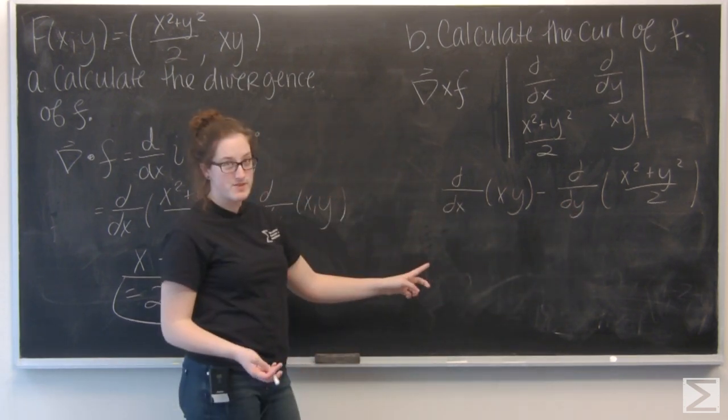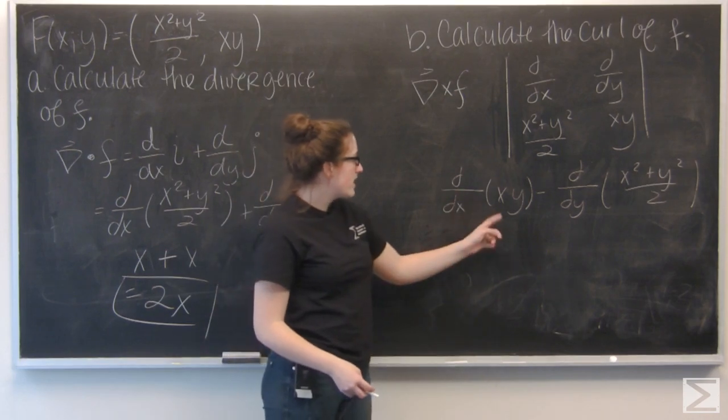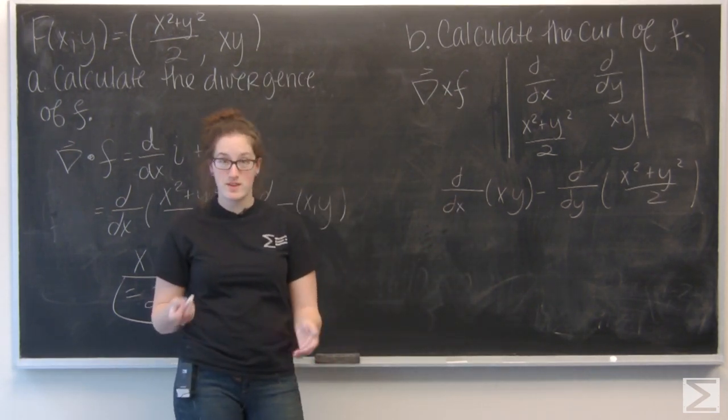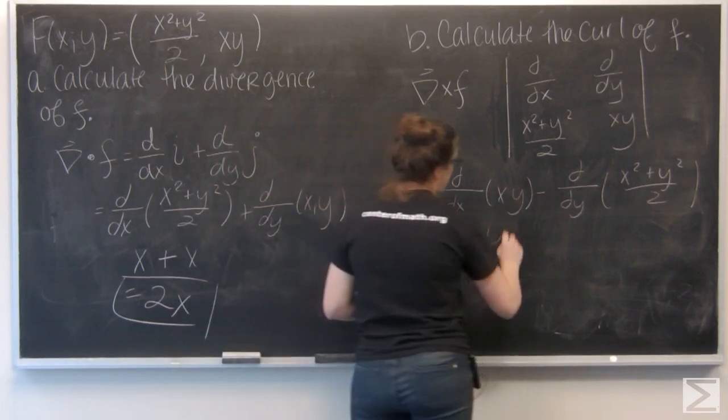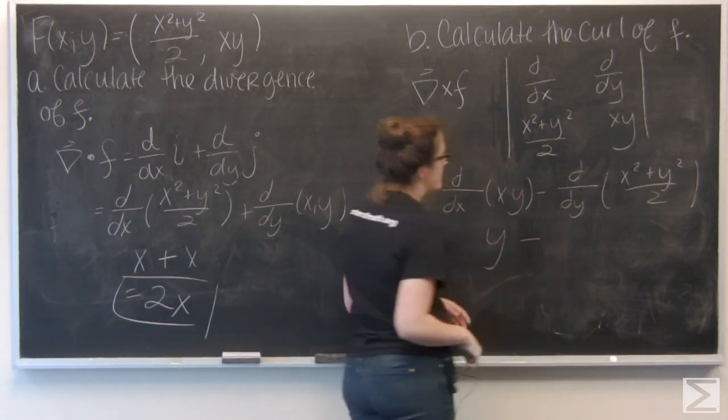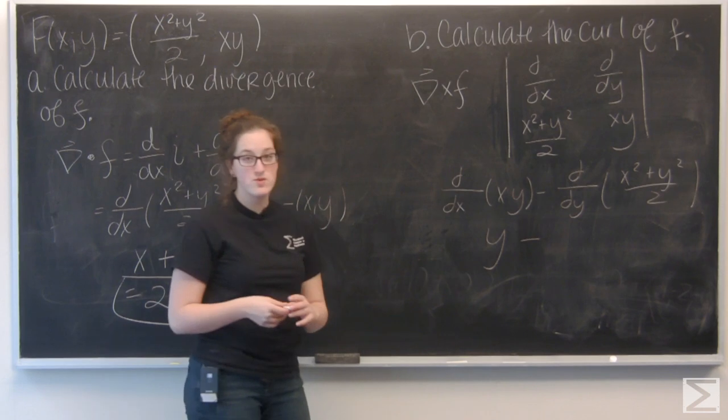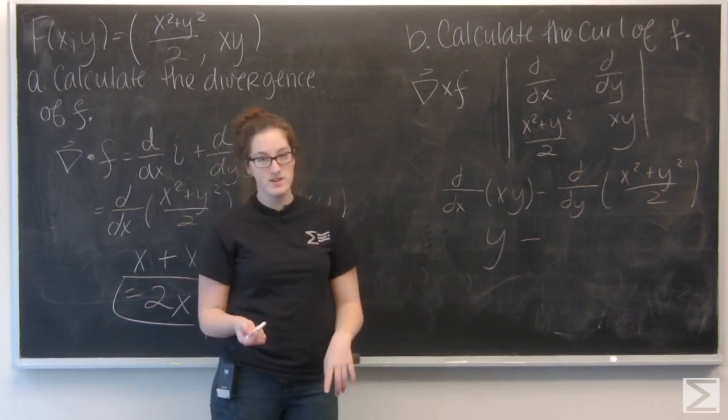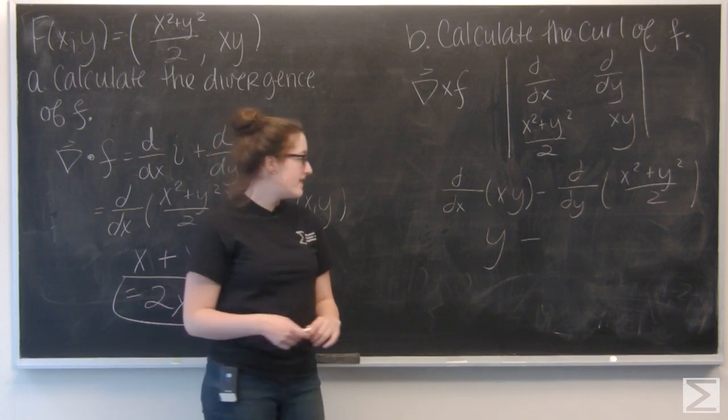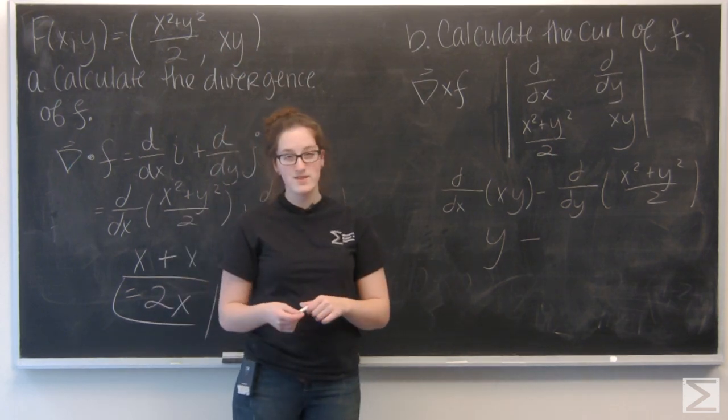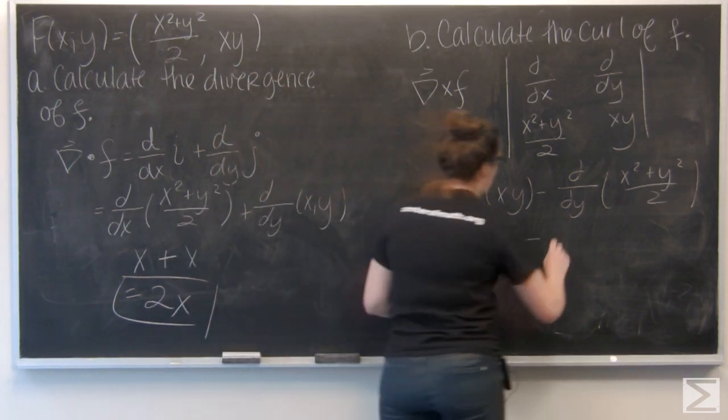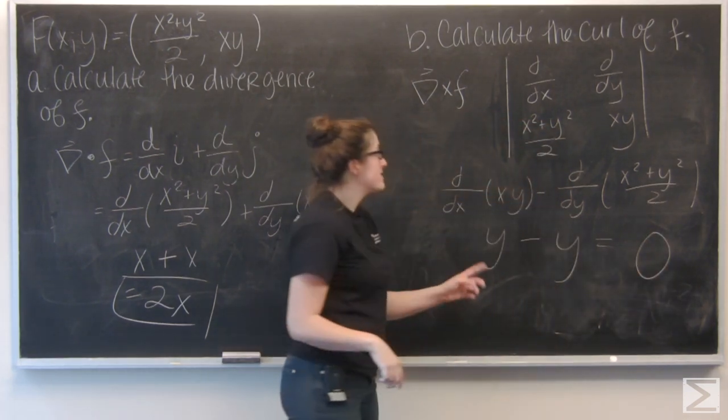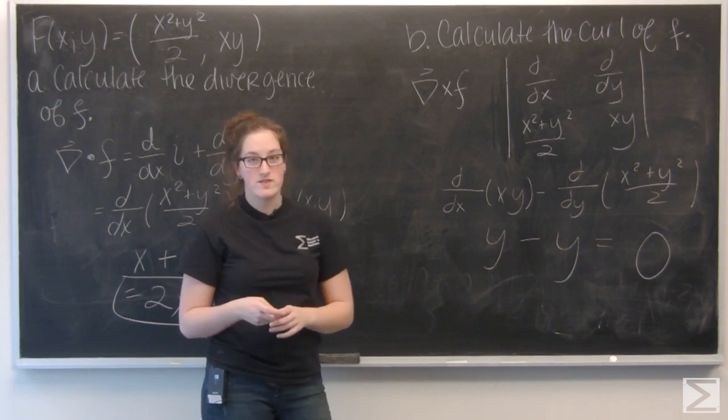Let's go ahead and start differentiating. So for xy, y is going to be treated like a constant. When I take its partial derivative, I just get y. And then for x squared plus y squared over 2, again, I'm going to think of it like 1 half x squared plus 1 half y squared. 1 half x squared is a constant, and then the derivative of 1 half y squared is going to be y. So I get y minus y and the curl of f is going to be 0.